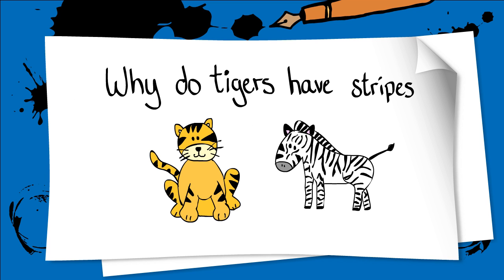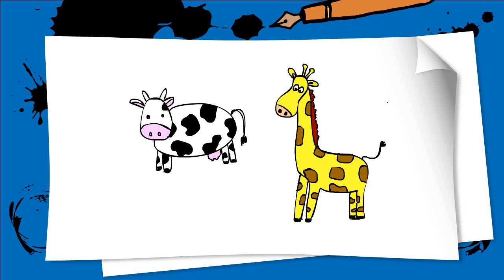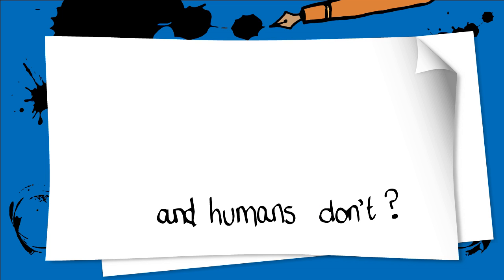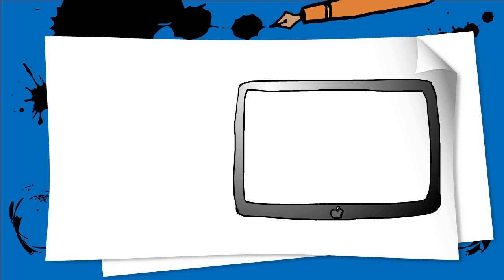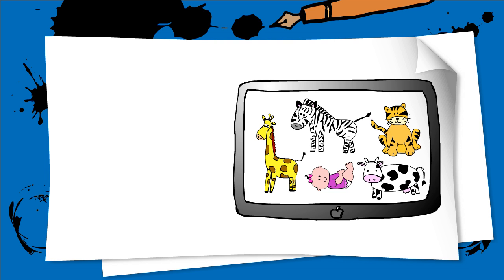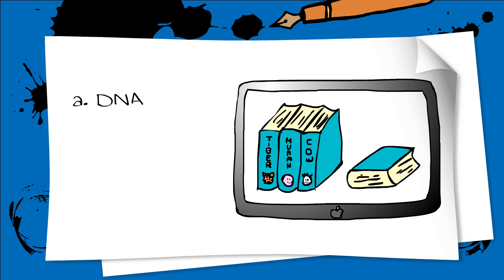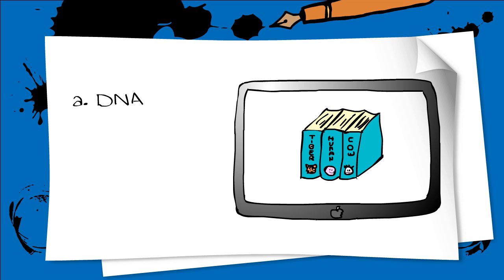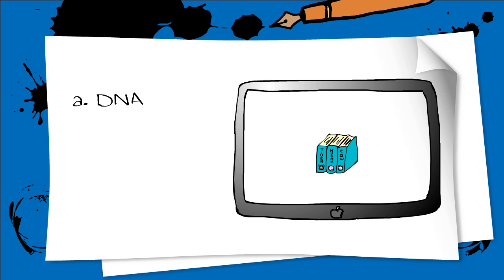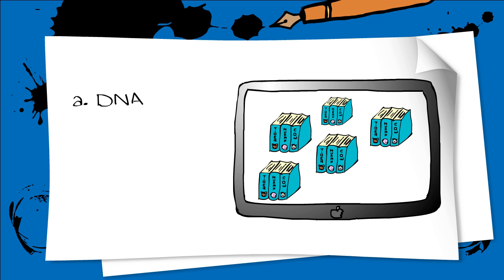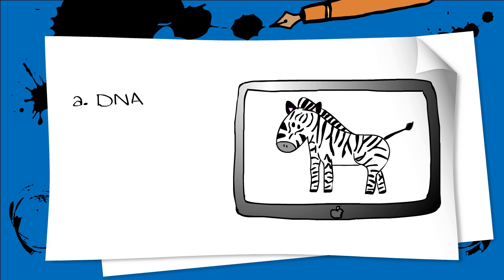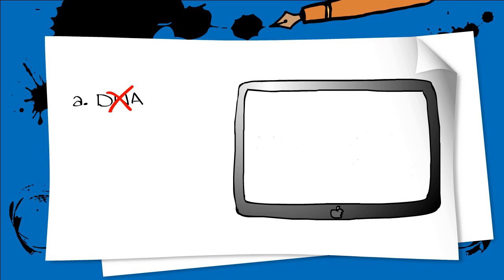Why do tigers and zebras have stripes, cows and giraffes have spots, and humans have nothing? Your instinctive answer might be to argue that because we're all different species, there is surely something in our DNA that specifies what patterns we get. Maybe there is a library with different skin patterns, and each species has a different set of blueprints. But that would be a huge library of blueprints, and even within the same species there are many differences. Is there another answer?